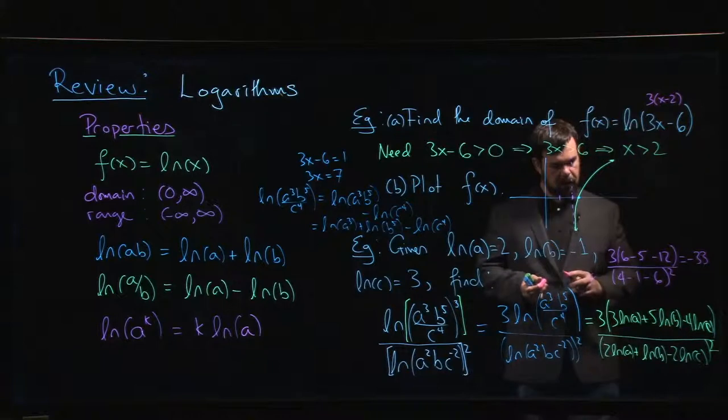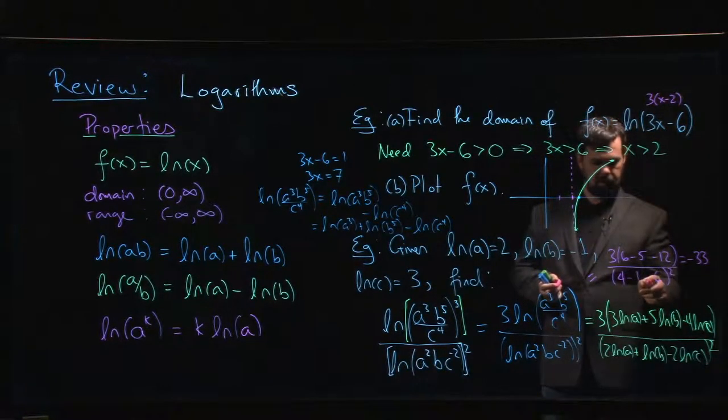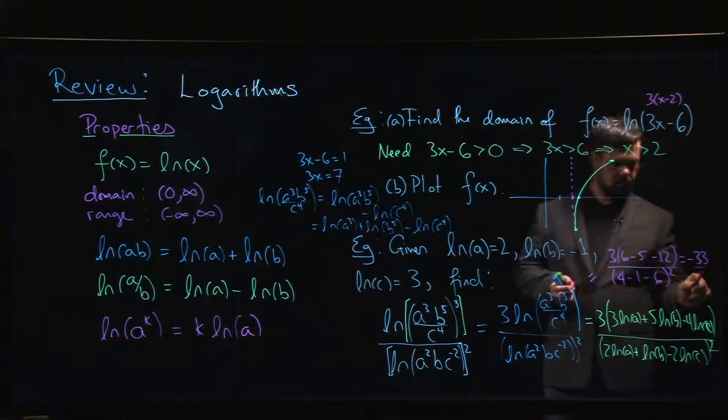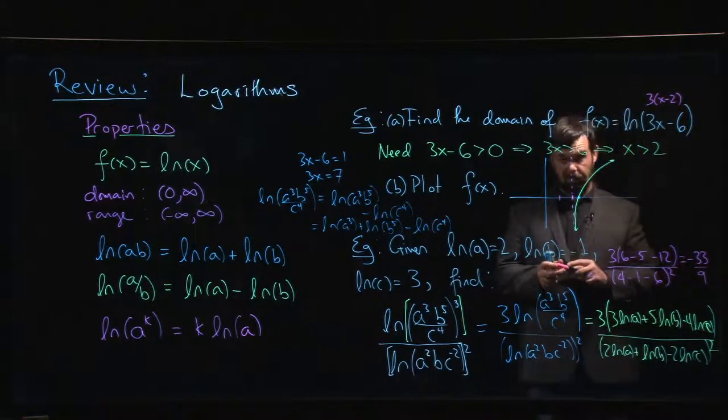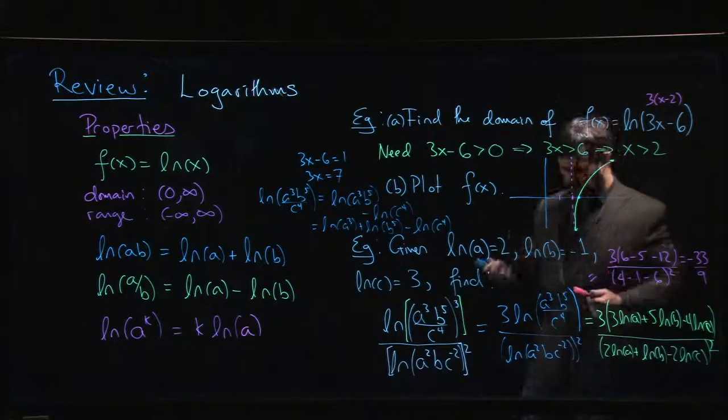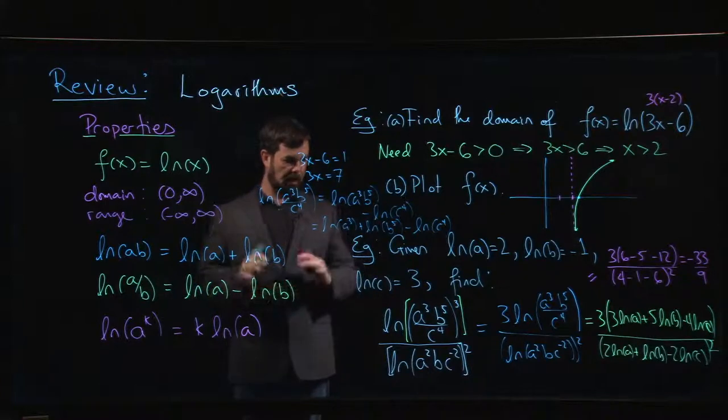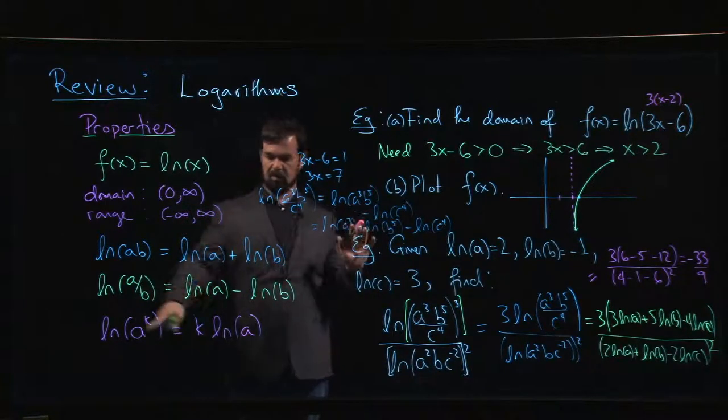So minus thirty-three over, what's that going to be on the bottom? Over nine, which I suppose you can simplify to minus eleven over three. But the point is to use the properties of logarithms, break everything down, then put in your numbers.